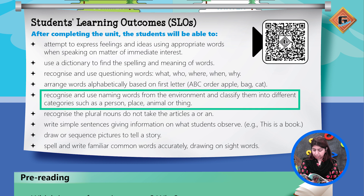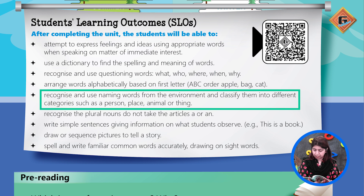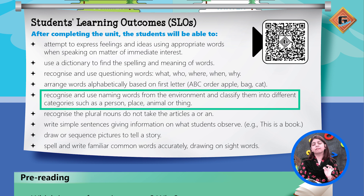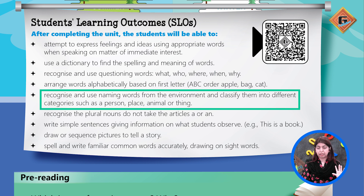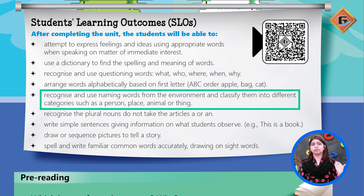Recognize and use naming words from the environment and classify them into different categories such as person, place, animal, or thing. یعنی کہ nouns کو classify کر سکیں کہ وہ کس category میں ہے — animal, place, thing یا person میں۔ اب noun کیا آتے ہیں، ہم پہلے بھی پڑھ چکے ہیں۔ Noun ہمارے پاس naming words تھے۔